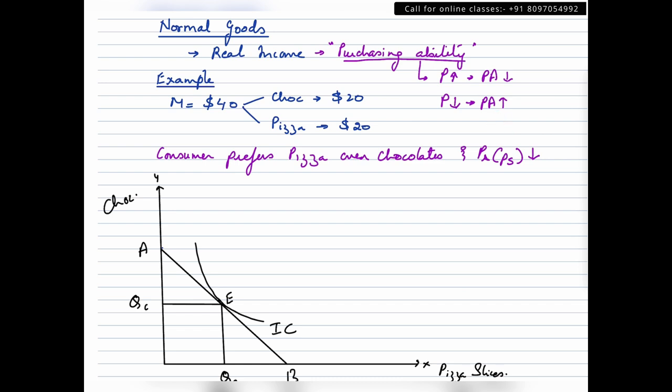Let us say a consumer has a money income of $100 and he is spending it on chocolates which is costing $5. So within this $100, a consumer will be able to buy 20 chocolates. That's a given common sense, right? Now, if the price of these chocolates go up to $10, the price has gone up from $5 to $10. Given the money income which is $100 in this case, a consumer will now be able to buy only 10 chocolates.